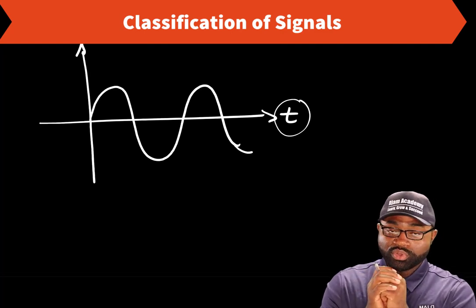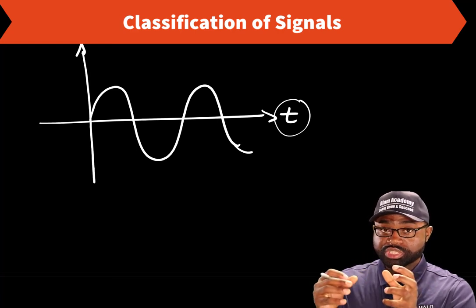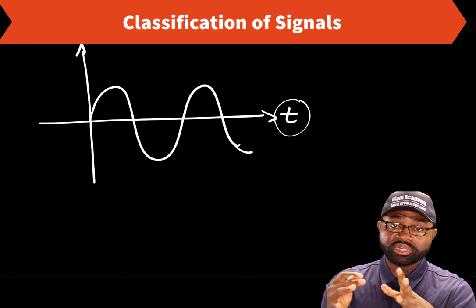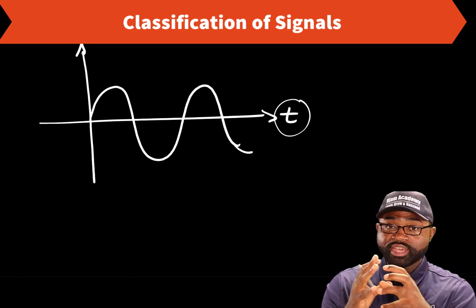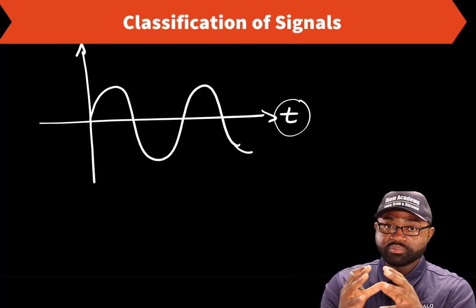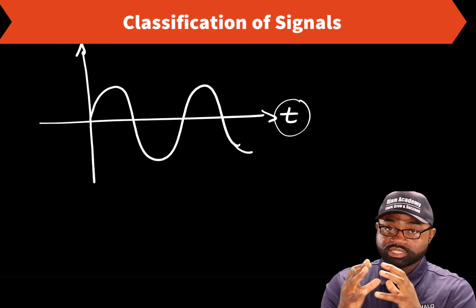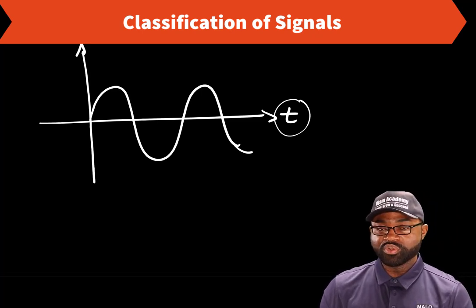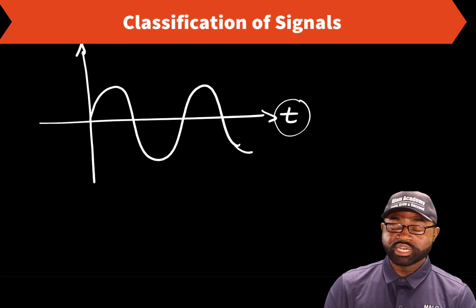Another example of a continuous signal is a function that represents the distribution or the attenuation of X-ray through a particular cross-section of the human body in a CT scan. The values of X and Y — the spatial distribution — are continuous in time and in space. To summarize, a continuous signal is continuous because its independent variable or variables are also continuous. It is present at all points in time and in space.